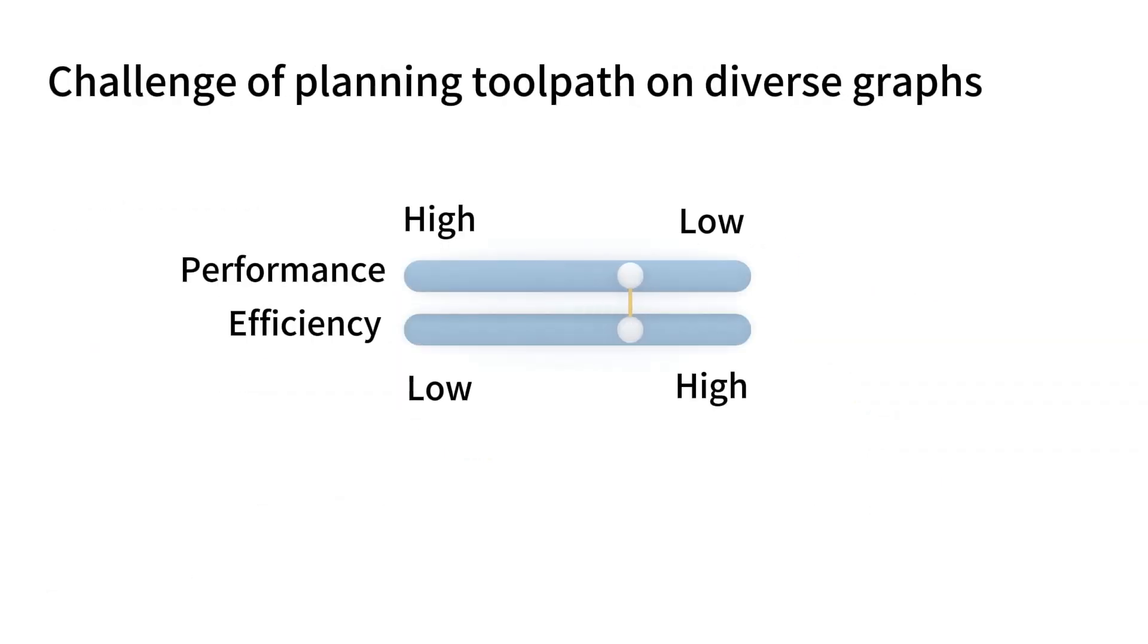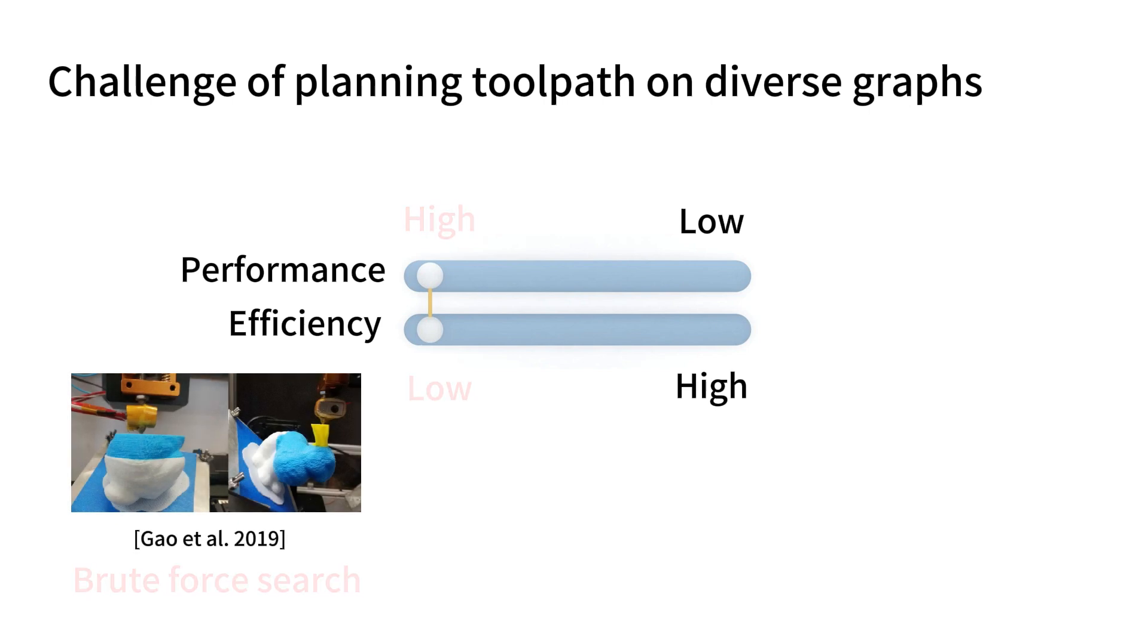Currently, most of the known 3D printing toolpath planning algorithms are based on the trade-off between performance and efficiency. For example, brute force search will find global optimum by trying all possible paths on the graph, which is time-consuming.